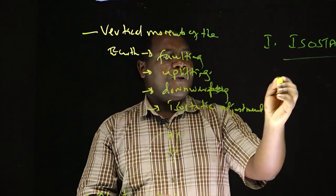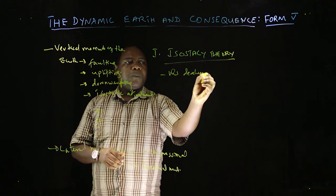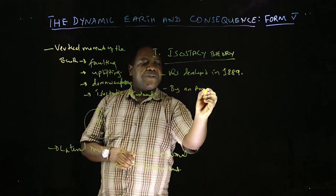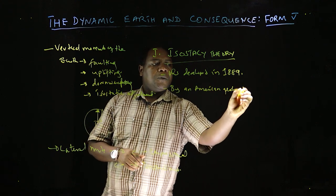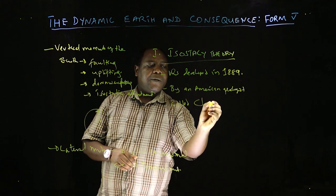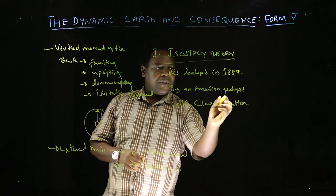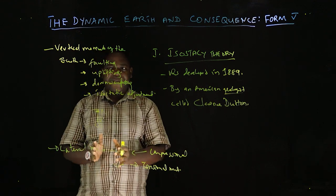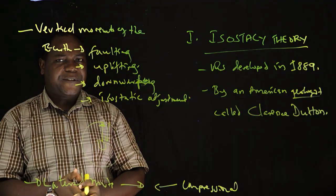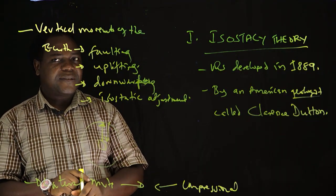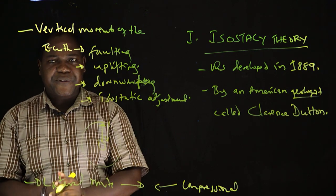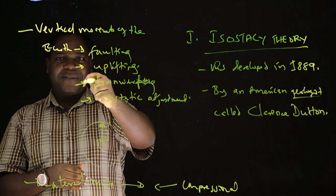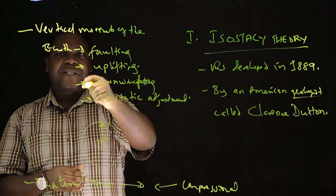The theory was developed in 1889 by an American geologist called Clarence Dutton — a geologist whose field of specialization was on rocks, their arrangement, layout, and nature. He was able to note that always the highlands are the areas of less dense materials, and the lowlands are the areas of denser materials. Any disturbance on the highlands will bring what we call isostatic imbalance.